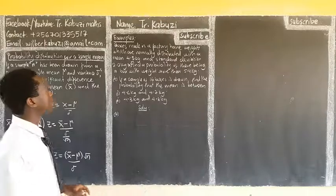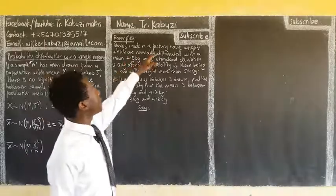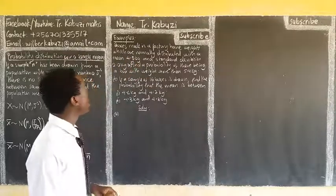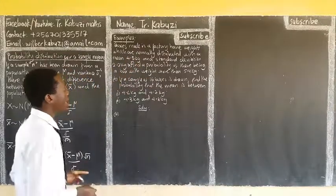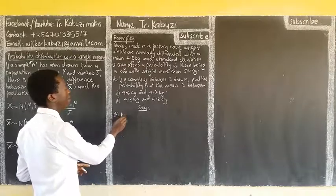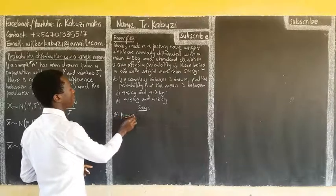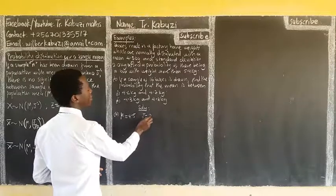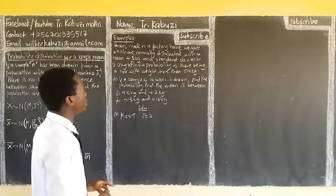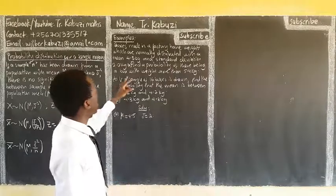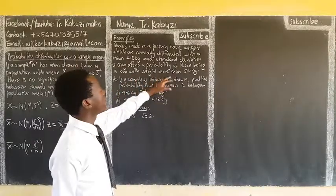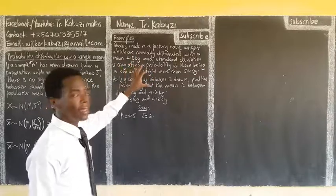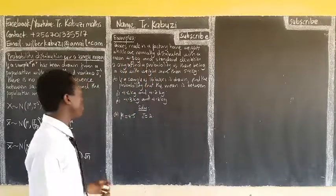Let us see some examples. Boxes are made in a factory have weights which are normally distributed with mean, so our mean is 4.5, and standard deviation sigma is 2. Find the probability of there being a box with weight more than 5.4. This one is just a normal distribution. We have not sampled anything, so this one is treated as a normal distribution.